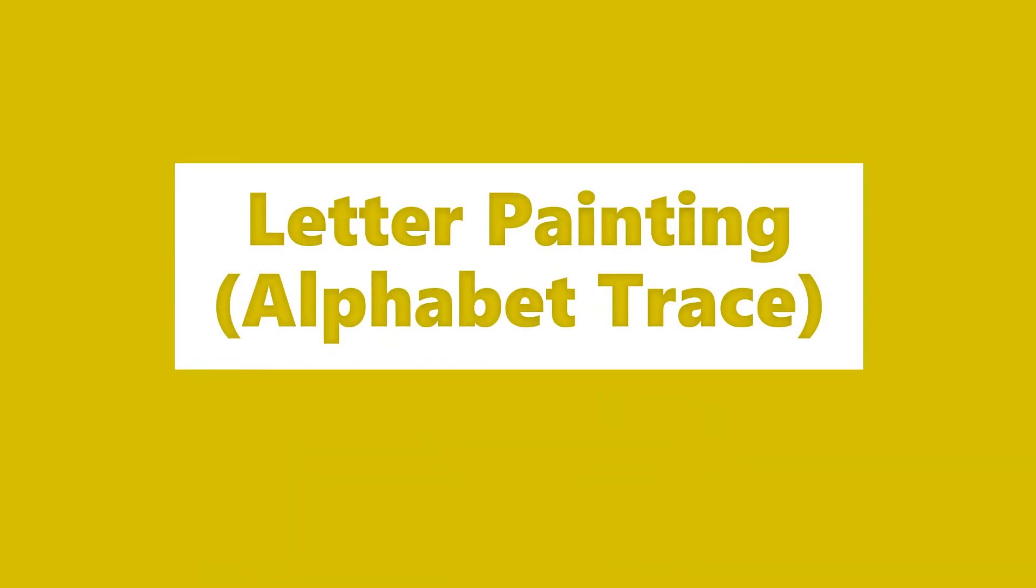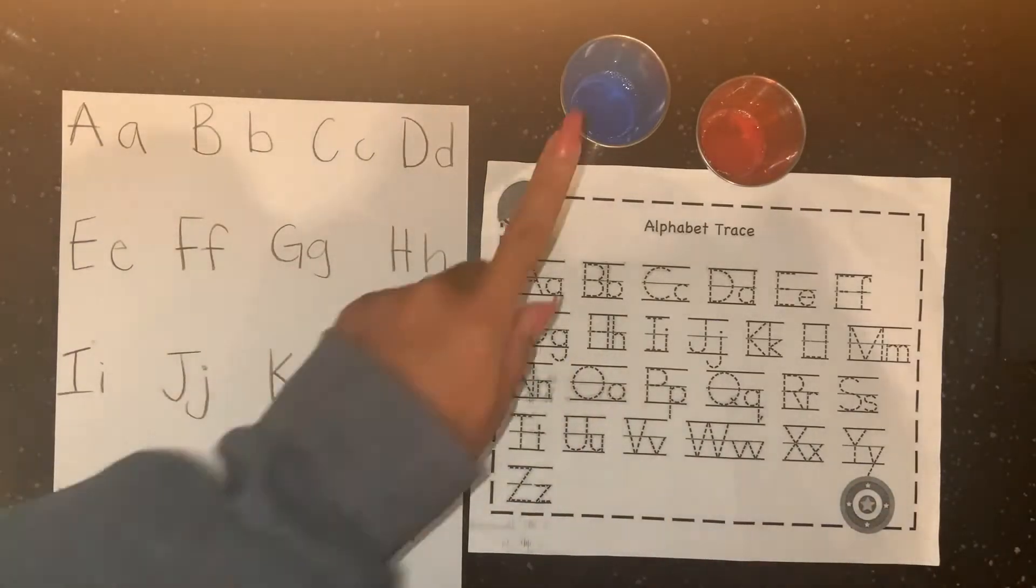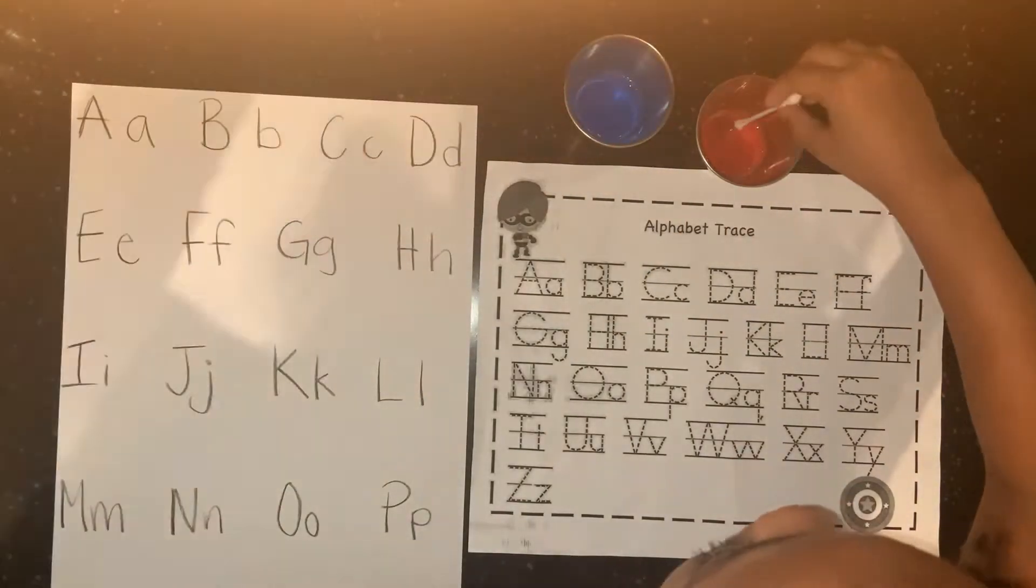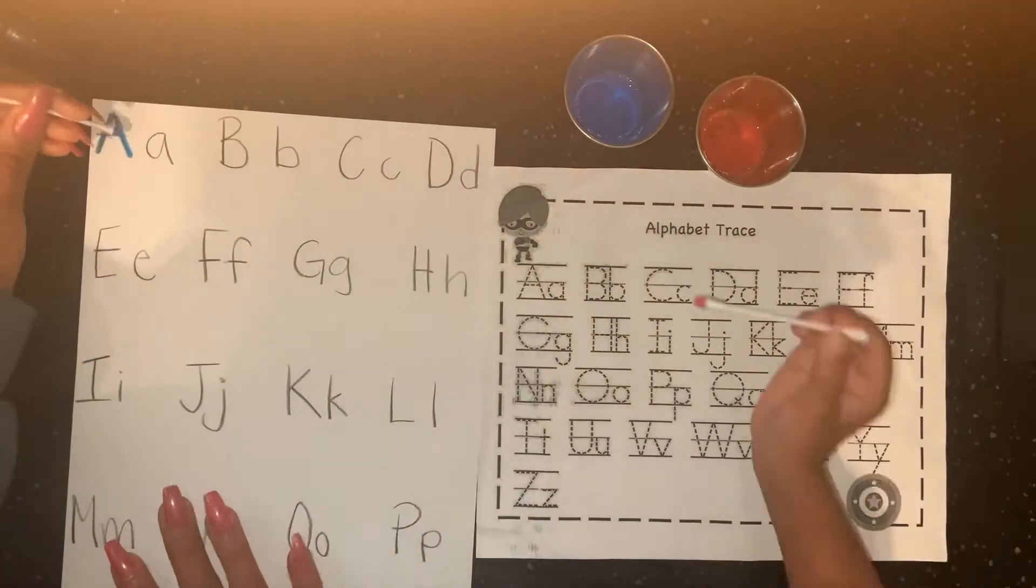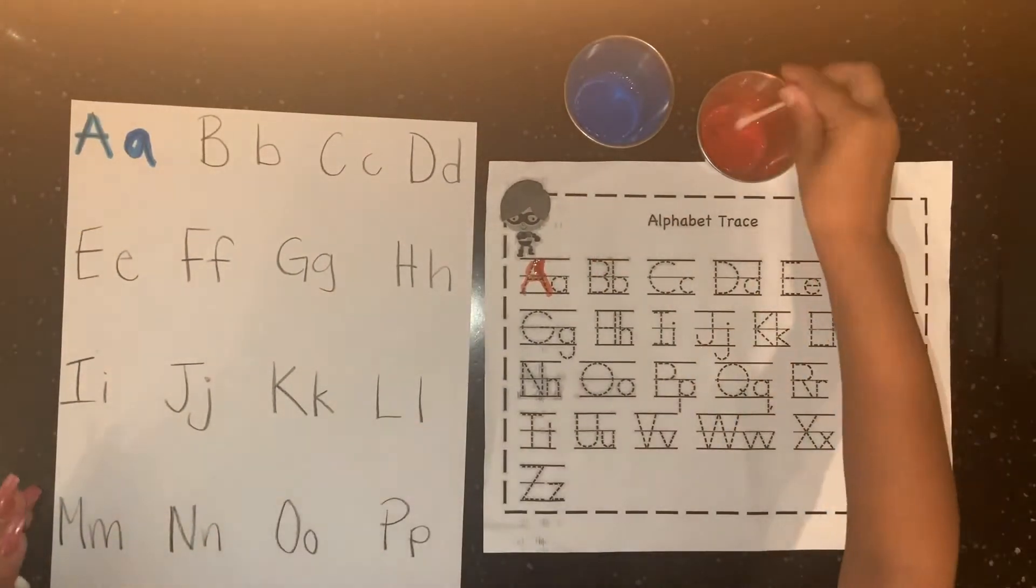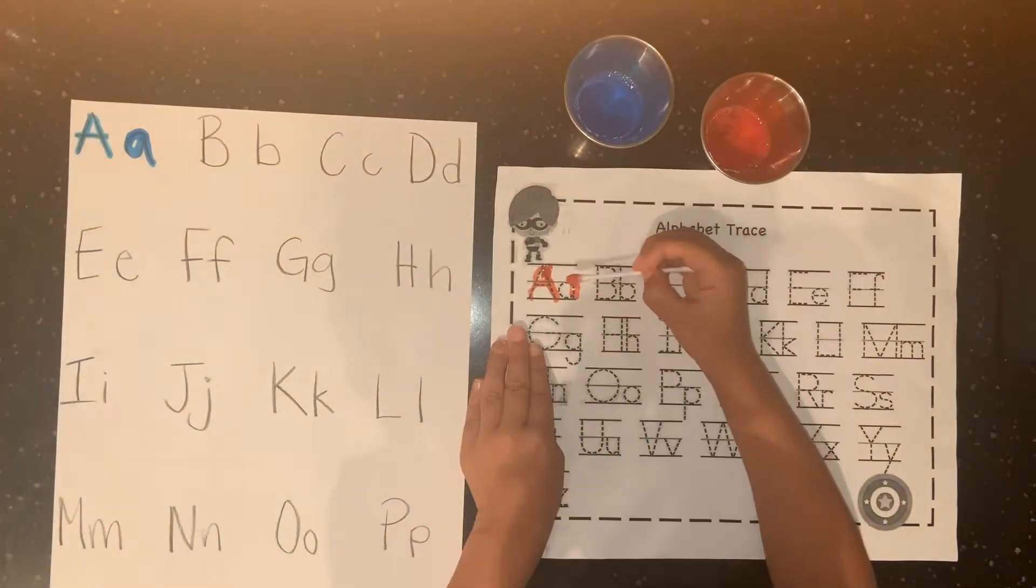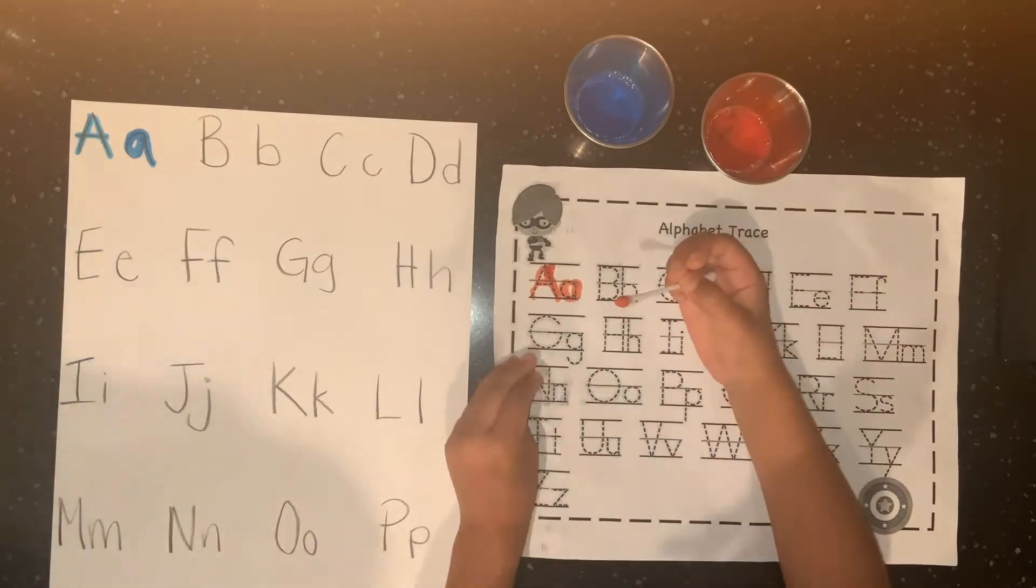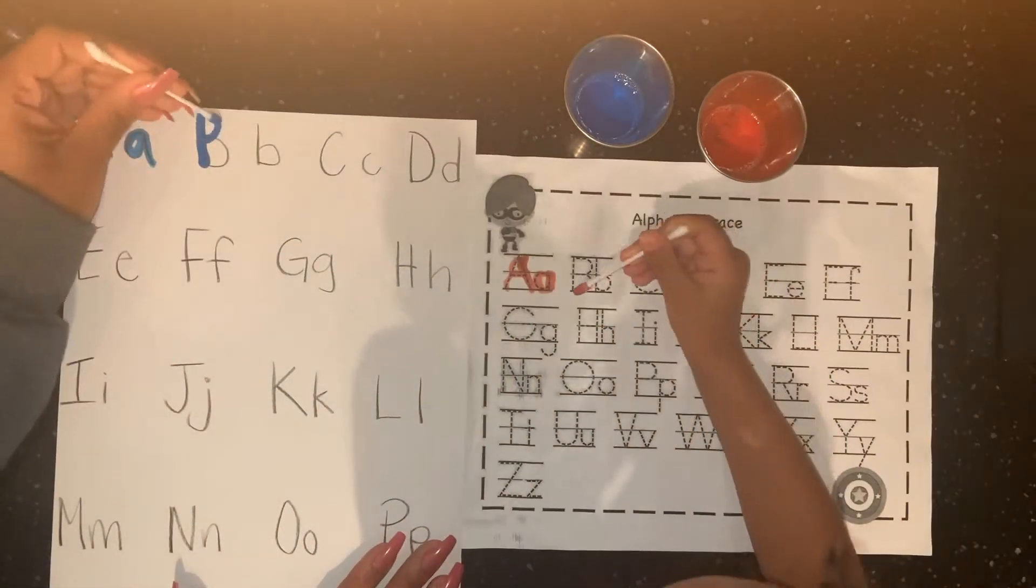Welcome back guys. This is Miss Brianna and I am here with my lovely helper Miss Naomi. The materials you'll need for this letter painting activity are paint, Q-tips, and your alphabet trace paper.